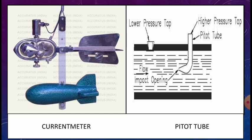These two are velocity measuring devices. One is current meter used to measure velocity in open channel flow, and another is pitot tube used to measure velocity in the pipe.